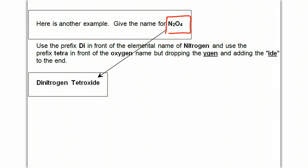Here's another example. If I give you the formula N2O4, you give me the name. Notice we have two nitrogens, and we have four oxygen.